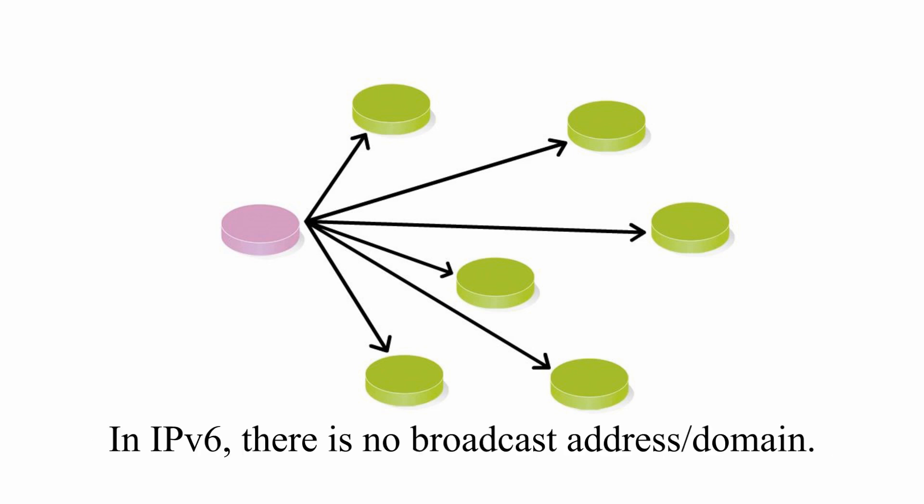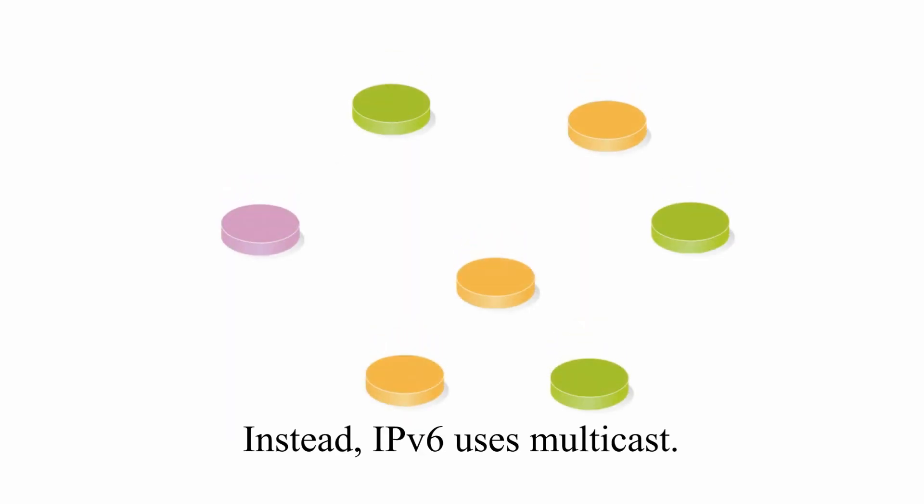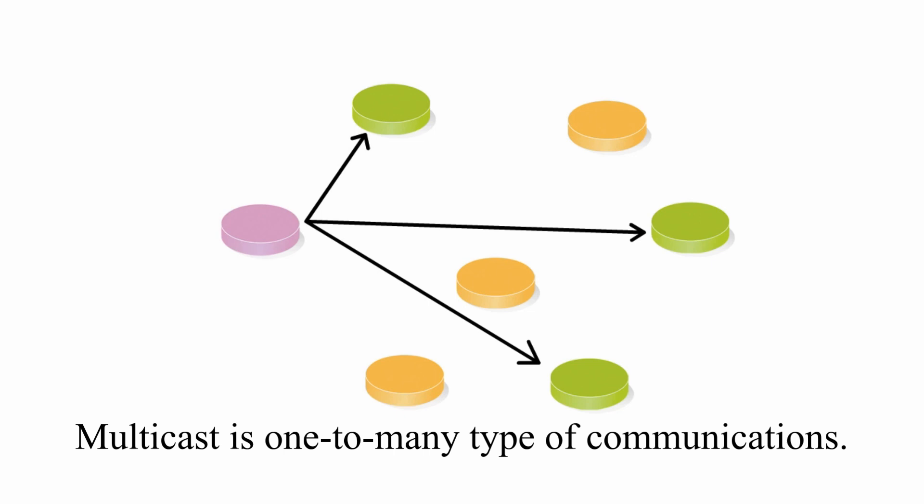In IPv6, there is no broadcast address or broadcast domain. Instead, IPv6 uses multicast. Multicast is a one-to-many type of communication.